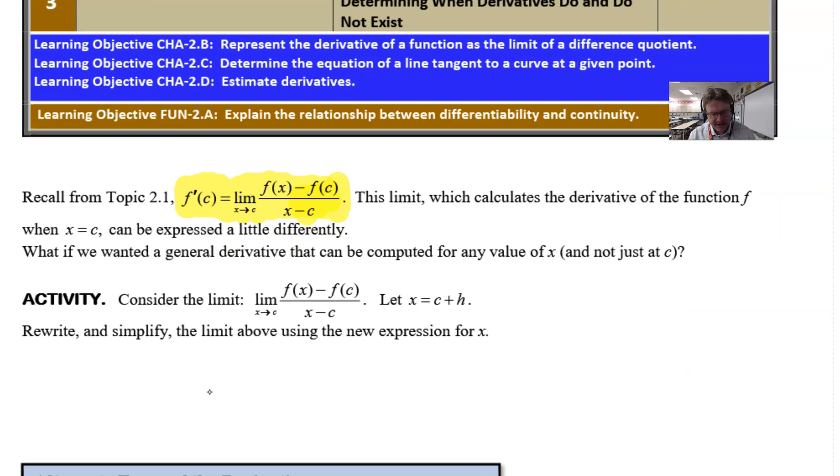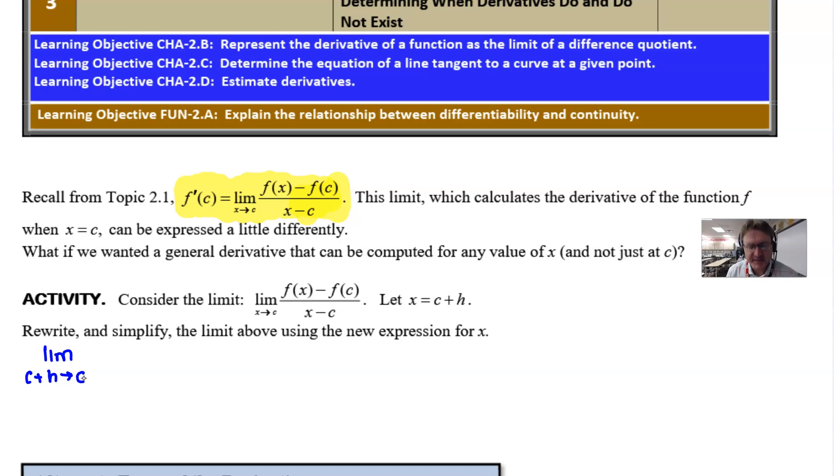So let's see what it says. It says rewrite and then simplify the limit above if we want to use the new expression for x, which is c plus h. Now I wouldn't worry a whole lot right now about what this c plus h means. Let's go ahead and just follow these directions and write this the way that it requests. So we would have the limit, and instead of x approaching c, I guess we would have to change that x to c plus h, so c plus h approaches c. Don't worry about that right now; we just want to replace all of our x's with c plus h.